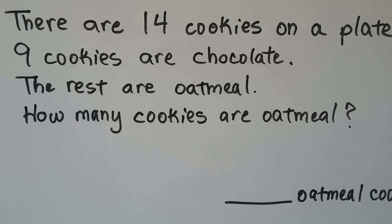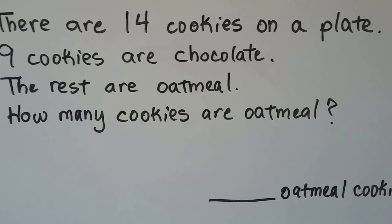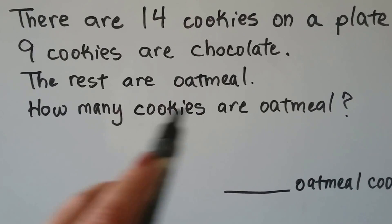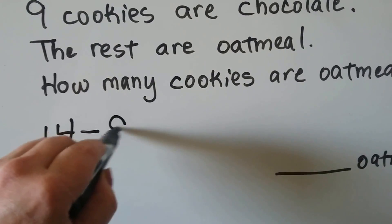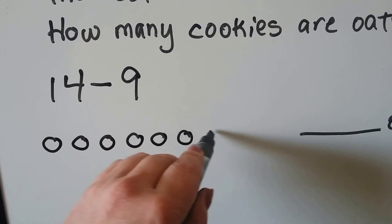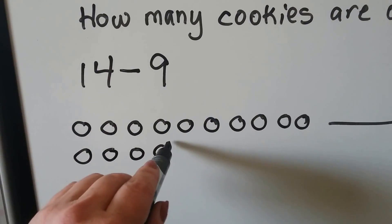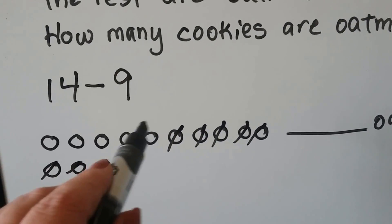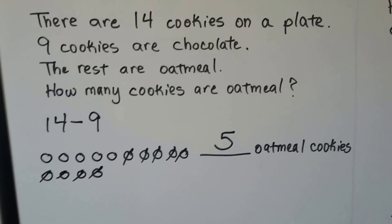It's asking us to find how many cookies are oatmeal out of the 14 cookies on the plate. We can use 14 and 9 to help us find the answer. We need to do 14 minus 9. We can make circles for the cookies and cross off 9: 1 through 9. Count how many are left: 1, 2, 3, 4, 5. That means 5 of the cookies are oatmeal, and 9 are chocolate. 9 plus 5 is equal to 14, so we know we did it correctly.